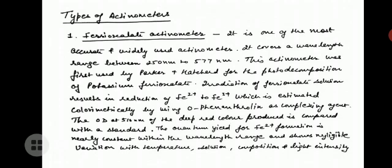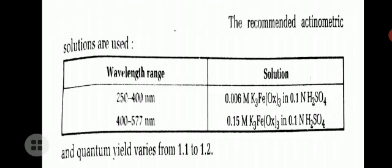1,10-phenanthroline as a complexing agent. The optical density at 510 nm of the tris-phenanthroline color produced is compared with a standard. The quantum yield for Fe²⁺ formation is nearly constant within the wavelength range and shows negligible variation with temperature, solution composition, and light intensity. The equivalent actinometric solutions used are shown in the table.